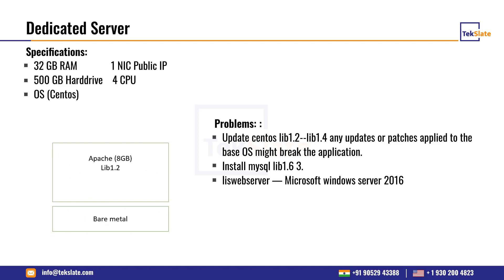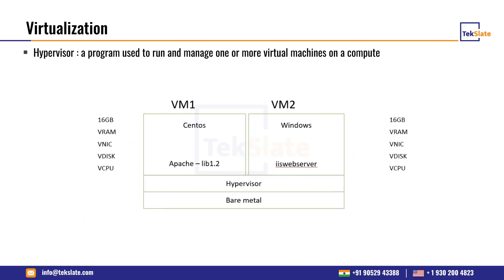The solution to these problems is by using the concept of virtualization. In virtualization, we use the same bare metal with the same specifications, but here on the bare metal we are installing a hypervisor. A hypervisor is a program to run and manage one or more virtual machines on your computer. There are two types of hypervisors — one that you install on your OS, and one that you install directly on your bare metal. Here I have installed KVM as my hypervisor. With this hypervisor, I will be installing two virtual machines: VM1 and VM2.